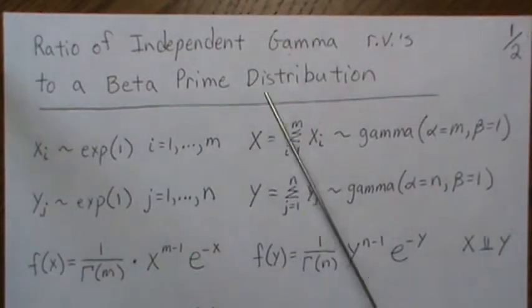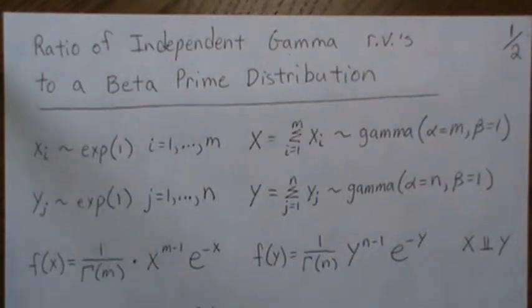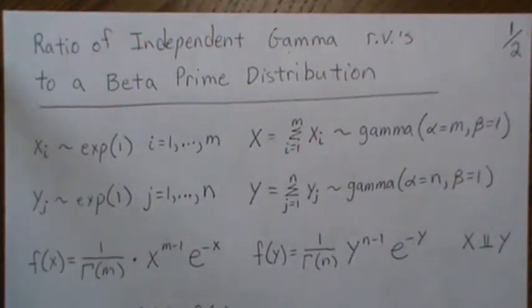And a beta prime distribution is, I'm going to call it a cousin to the beta distribution. They're one-to-one functions of each other.